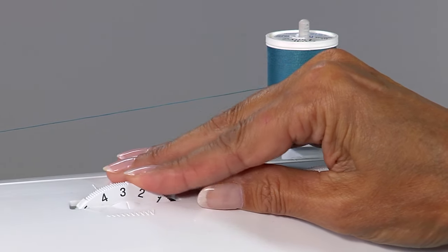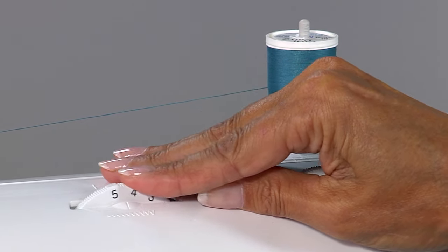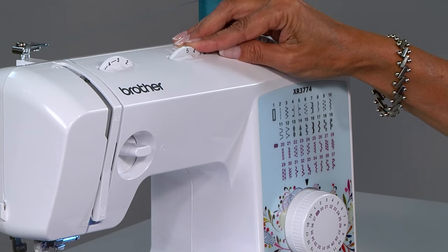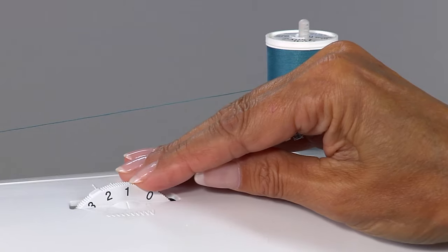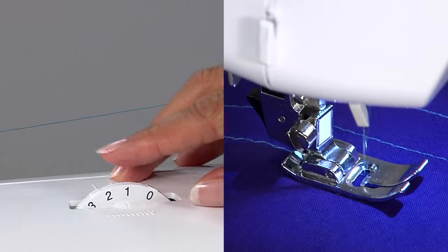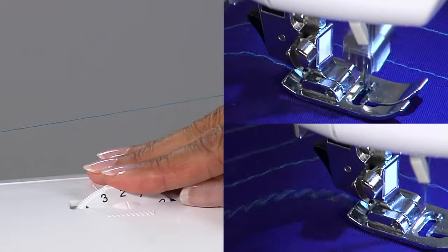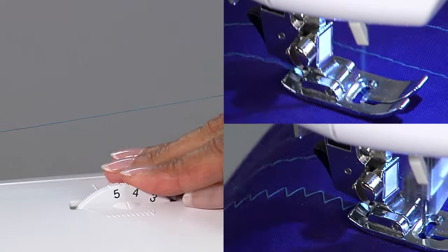But on a zigzag stitch and many of the decorative stitches, you can adjust how wide the stitch will stitch out. The lower number being a very narrow stitch width, going up to a very wide stitch width.